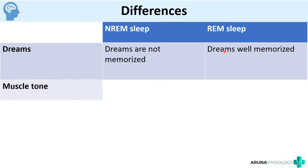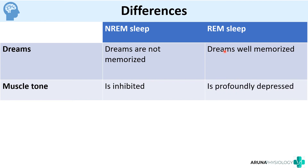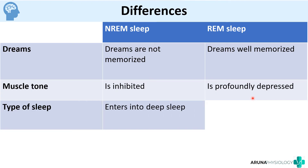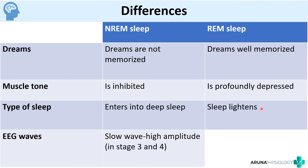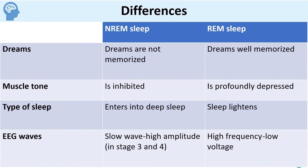Muscle tone is inhibited in both REM and NREM, but it is profoundly depressed in REM sleep — except for the eye muscles, all others are profoundly depressed. Regarding type of sleep: in NREM the person enters into deep sleep as the stages progress, whereas in REM the person is more likely to be awakened and the sleep lightens. Regarding EEG waves: in NREM each stage has different EEG, and especially in stages 3 and 4 we have slow wave, high amplitude waves. In REM sleep we have high frequency, low voltage EEG. You can use a mnemonic to study all these differences, as this is an important exam question.